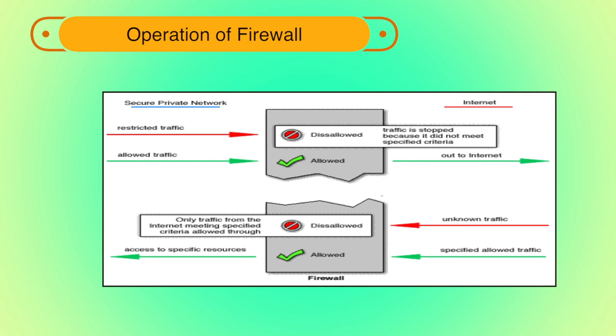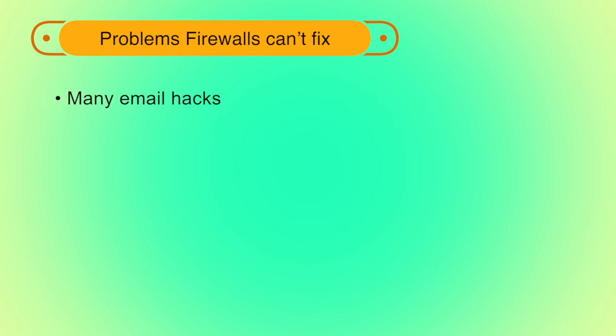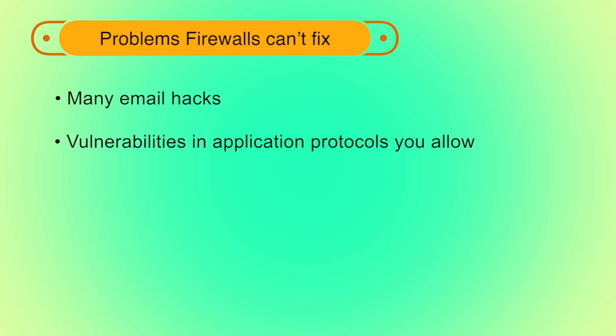How a firewall determines what traffic to let through depends on which network layer it operates at. However, there are problems that firewalls cannot fix, such as many email hacks and vulnerabilities in application protocols you allow — for example, incoming HTTP requests to an IIS server. Also, modems: do not allow users on the internal network to use a modem to connect to an external ISP, as this exposes everything that user is connected to. Many users don't like firewall restrictions and will try to subvert them.